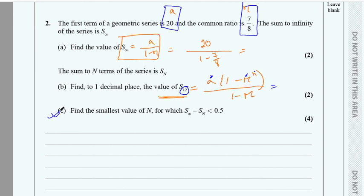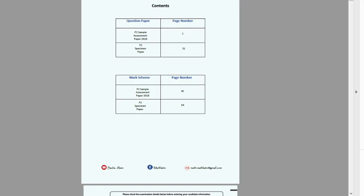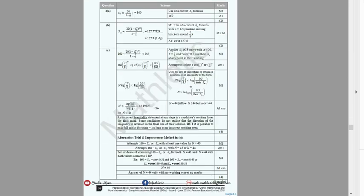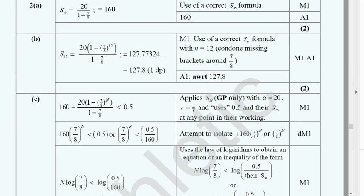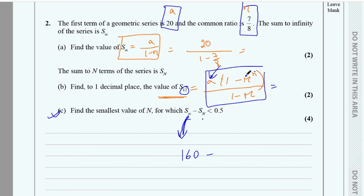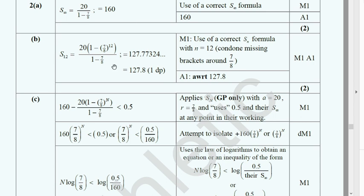For part c, we need S∞ minus Sₙ less than 0.5. We already know S∞ is 160. For Sₙ, replace a and r but keep n as the unknown since we are trying to find n. So set up: 160 minus Sₙ less than 0.5.